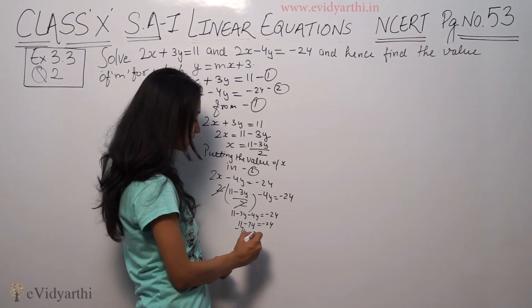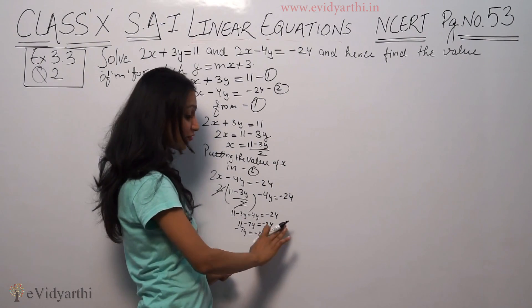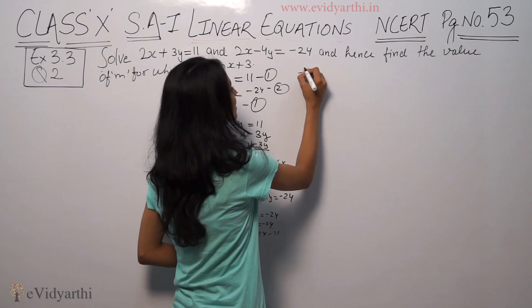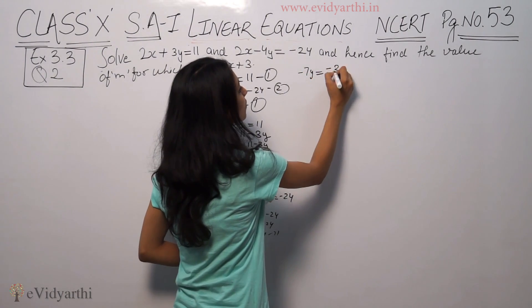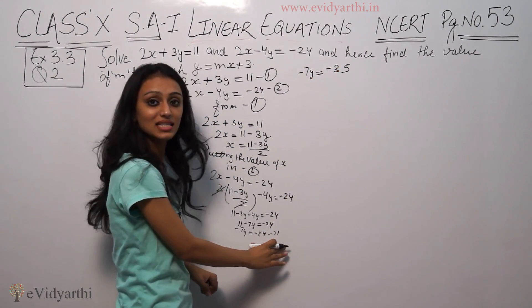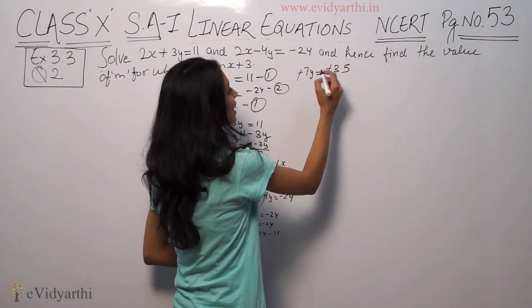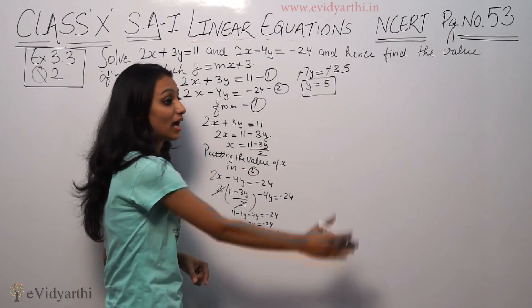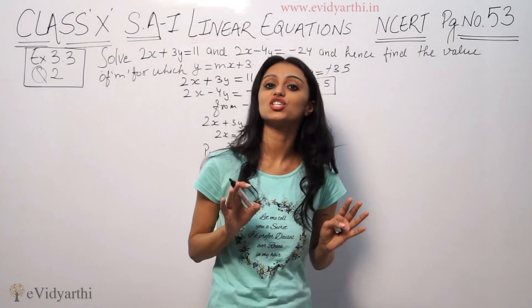So minus 7y equals minus 24 minus 11, this is minus 7y equals minus 35. Minus minus plus, so minus signs cancel, y equals 5.